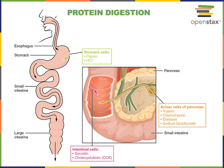Pepsin is first secreted as an inactive precursor. The chief cells at the base of gastric pits secrete pepsinogen, an inactive precursor that then becomes activated by the low pH of gastric juice. The parietal cells of the gastric pits secrete hydrochloric acid, which creates a low pH environment, activating pepsinogen to become pepsin.